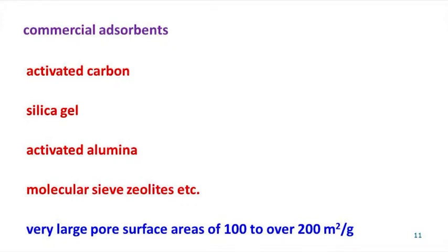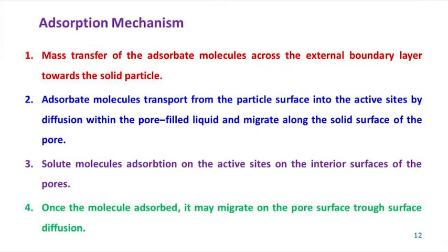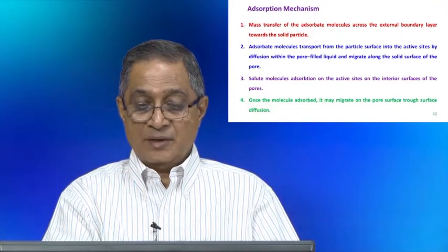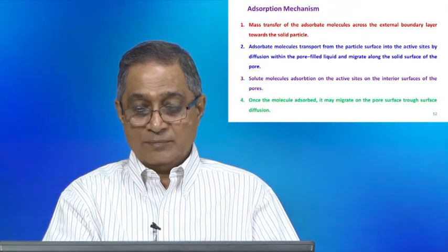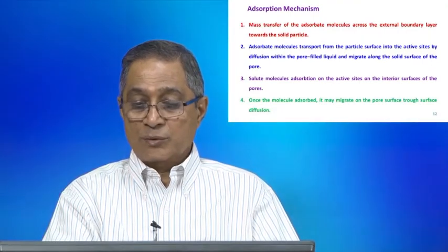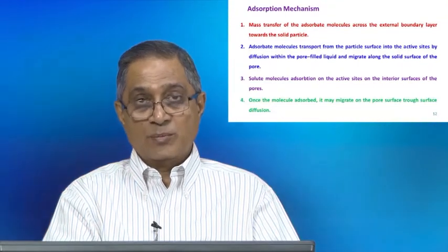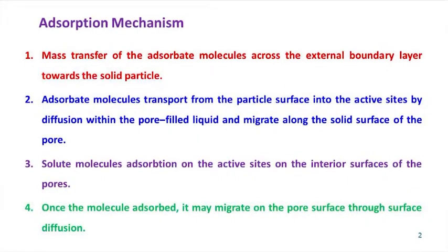How does adsorption occur? What is the adsorption mechanism? The adsorption process of adsorbate molecules from the bulk liquid phase onto the adsorbent surface is presumed to involve four stages. In the first stage, mass transfer of the adsorbate molecules occurs across the external boundary layer towards a solid particle. In the second stage, adsorbate molecules transport from the particle surface into active sites by diffusion within the pore, pore-filled liquid, and migrate along the solid surface of the pore. The third step is solute molecule adsorption on the active sites and on the interior surface of the pores. Finally, in the fourth step, once the molecule is adsorbed, it may migrate on the pore surface through surface diffusion.